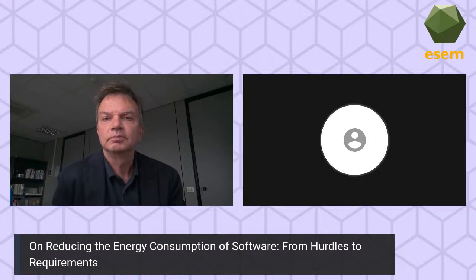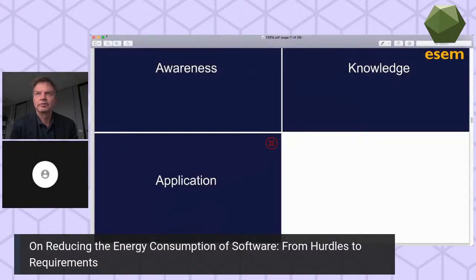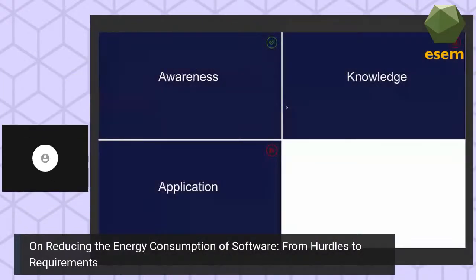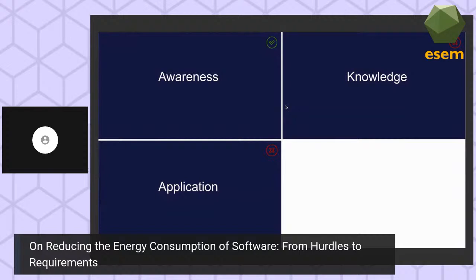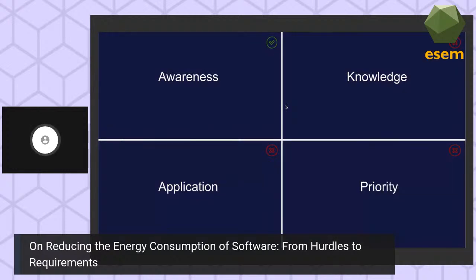Being important is one thing, but being a priority is another. At least that's what we analyzed during our study — developers tend not to prioritize green aspects in professional development, and some conflicts may even arise with other existing metrics such as maintenance or security.